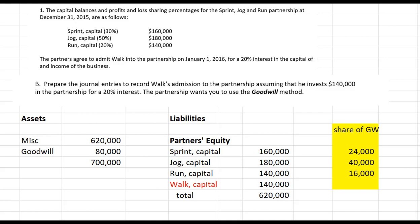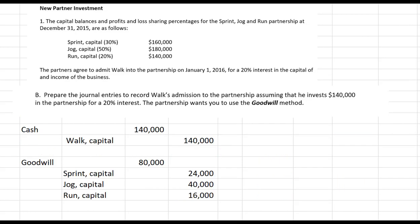I've figured out how much to add to each of the original partners' equity accounts so that collectively they go up by $80,000. Sprint gets $24,000, Jog gets $40,000, and Run gets $16,000 — all credited to increase their capital accounts. The question wanted journal entries, so we write two entries: the first records the goodwill, getting assets to where they need to be; the second brings in the new partner with his $140,000 contribution. To do the goodwill method, it takes two journal entries.